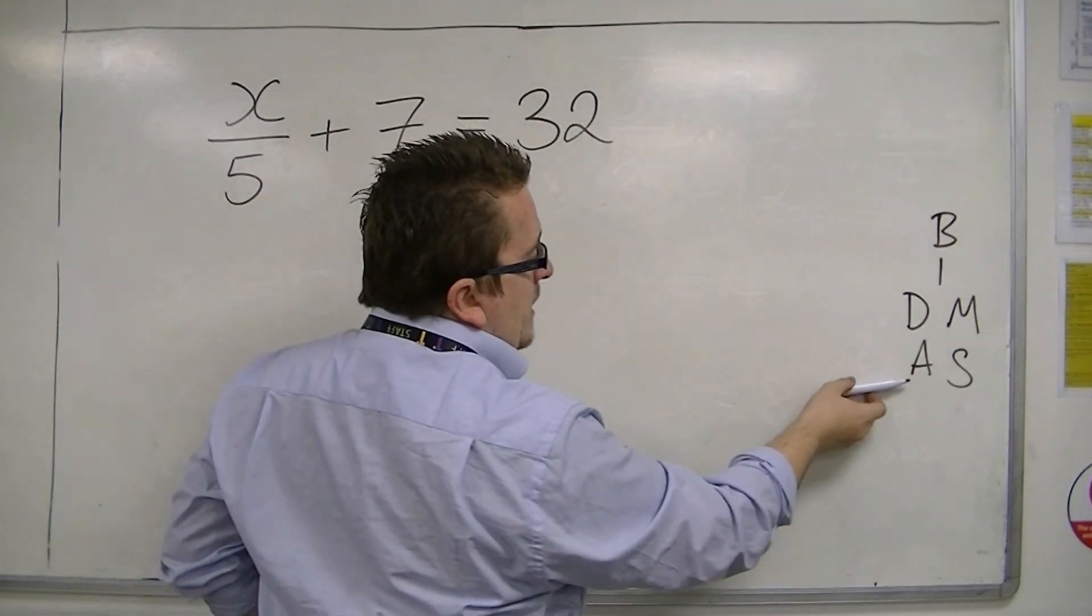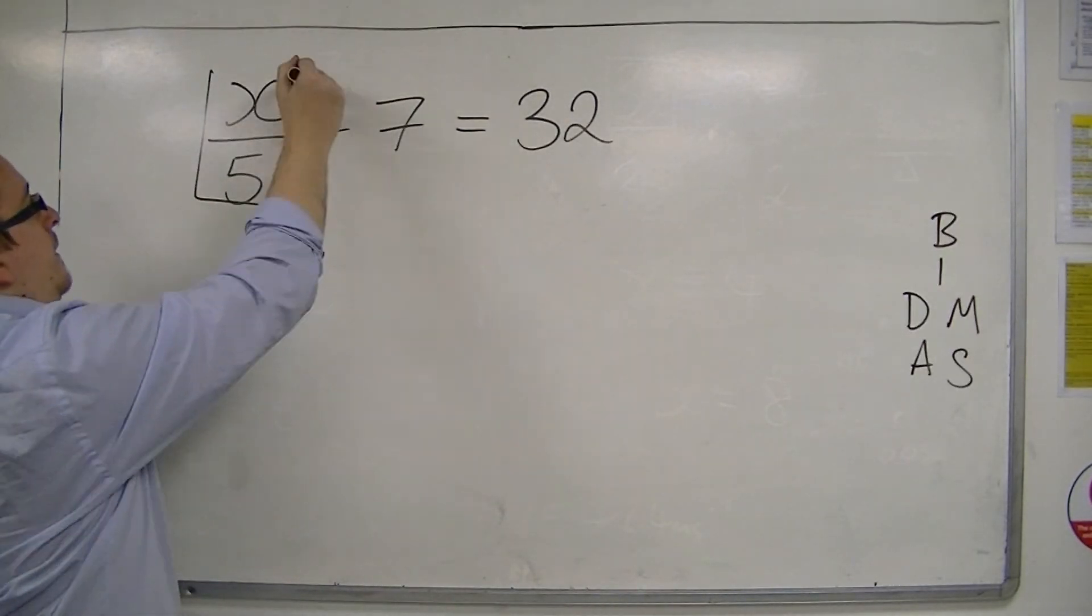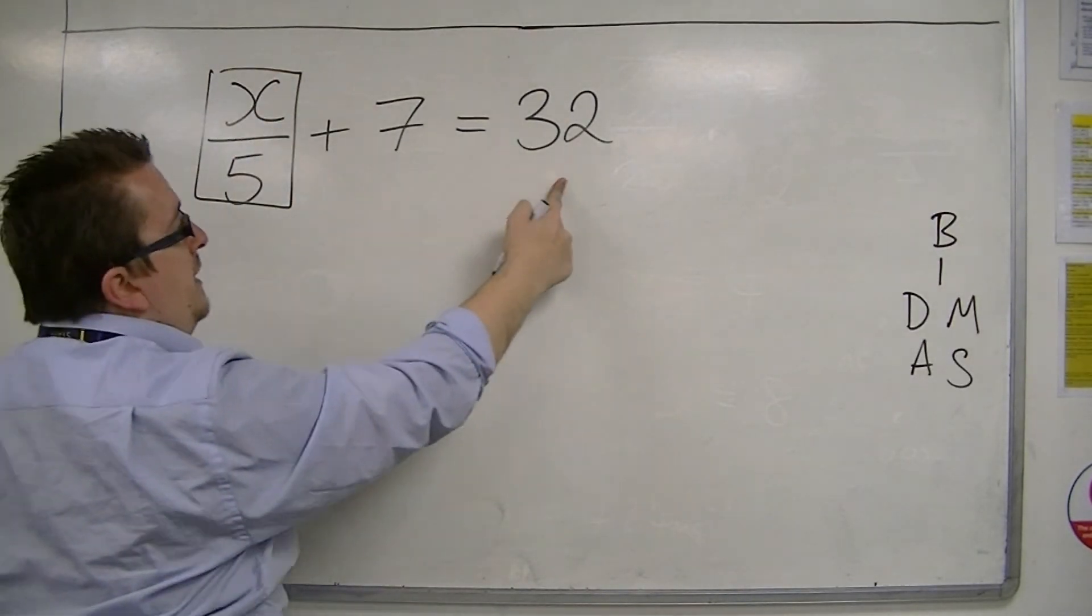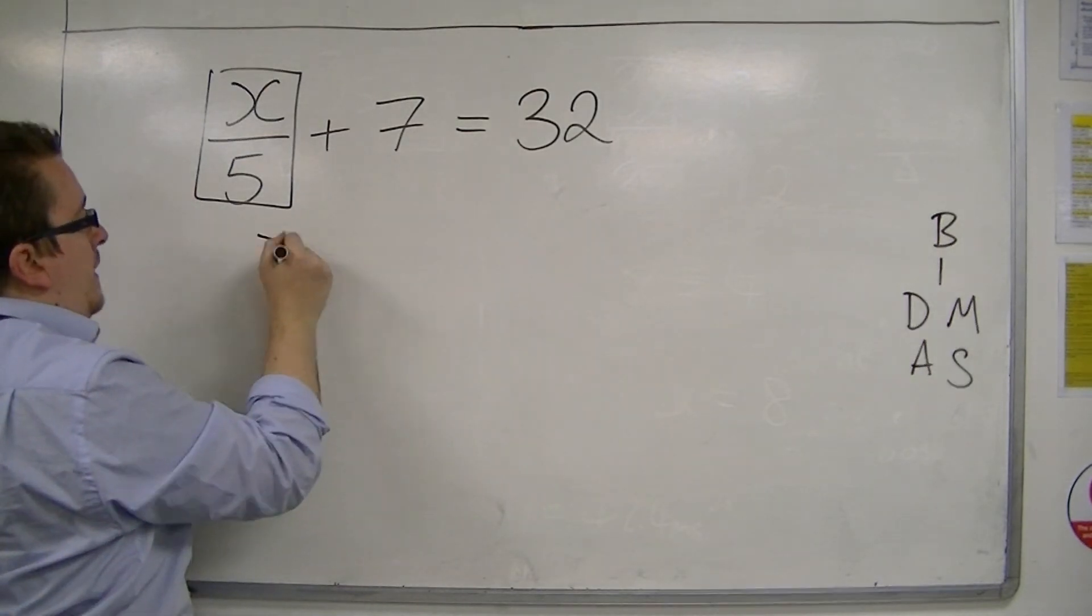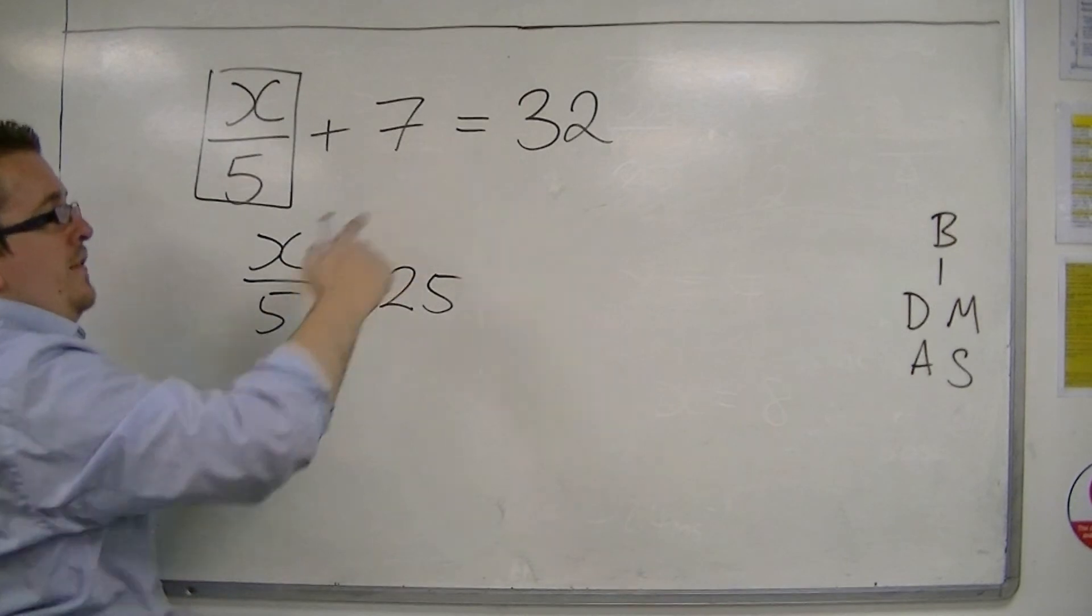I'm dealing with BIDMAS backwards and I'm going to deal with the addition and subtraction first. So something plus 7 is 32, and that something must be 25, because 25 plus 7 is 32.